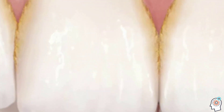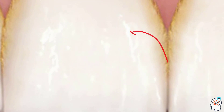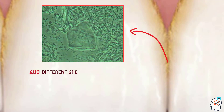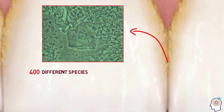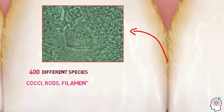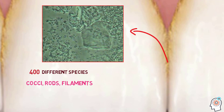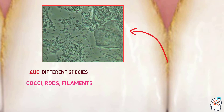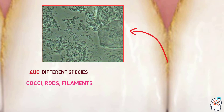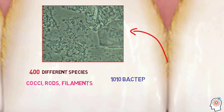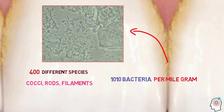About 400 different species of bacteria take part in the formation of dental plaque. A variety of different bacterial forms can be found. It is estimated that dental plaque contains 10¹⁰ bacteria per milligram.